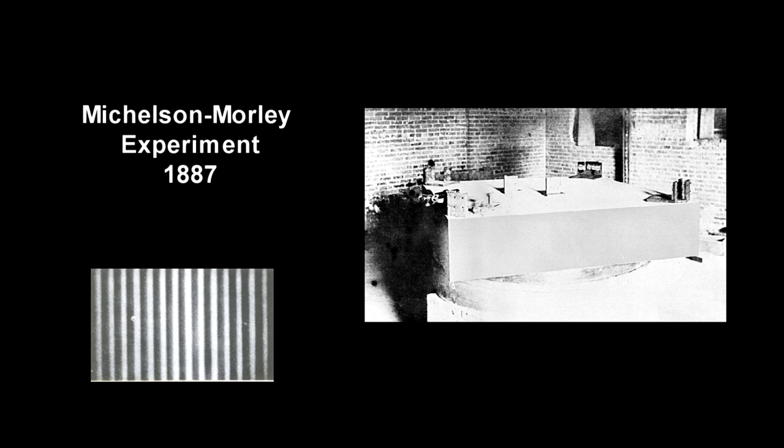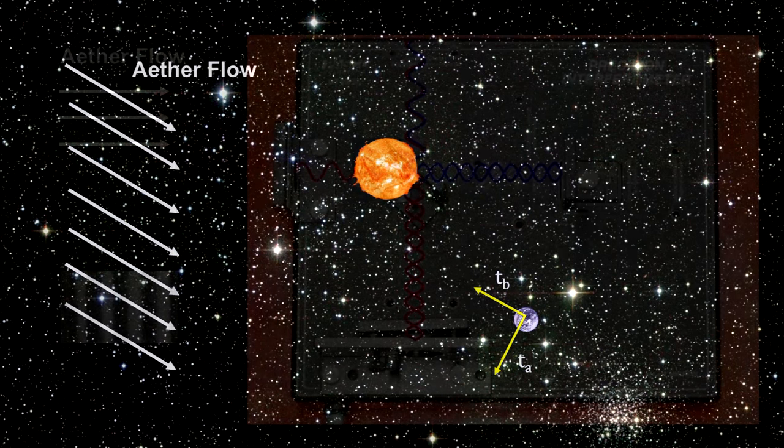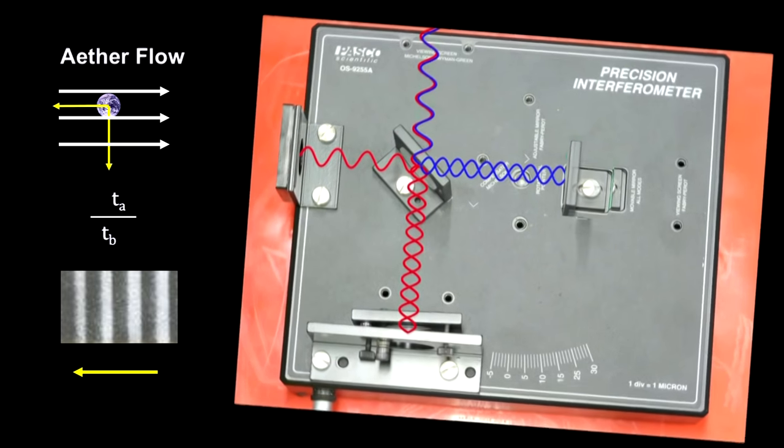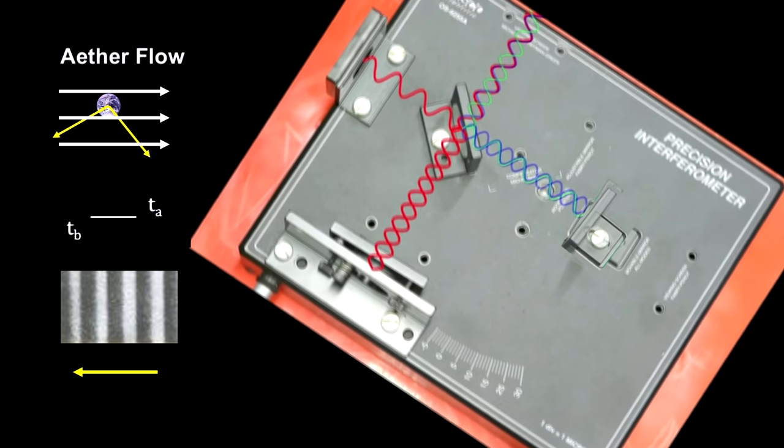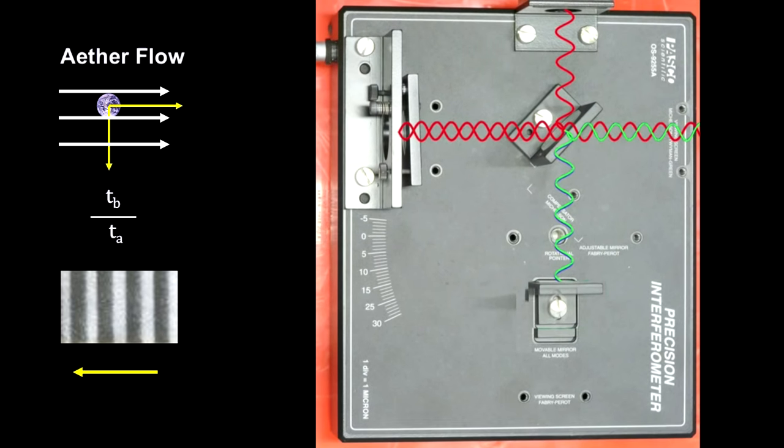Here's the actual interference pattern they saw. As the interferometer is rotated, the light flowing perpendicular to the direction of the ether would take time T sub A and the light flowing with and against the ether would take time T sub B. Rotating the interferometer would change the ratio from T sub A over T sub B to T sub B over T sub A and the interference pattern would shift. Using the speed of the Earth through the ether, they estimated that the shift in the pattern would be just under one half of a fringe.